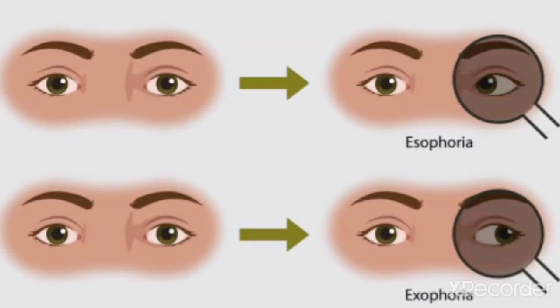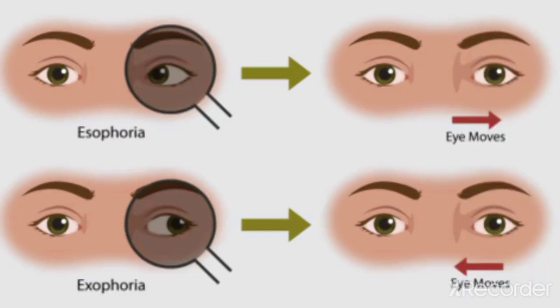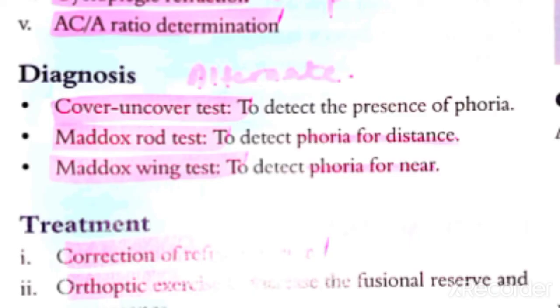When we cover the eye, the latent squint is hidden inside. When we remove the cover, the eye deviates and then returns to its normal position. For example, if the eye moves laterally when covered and returns when uncovered, this indicates exophoria — a latent divergent squint. The Maddox rod test is used for distance assessment and the Maddox wing test is used for near assessment.